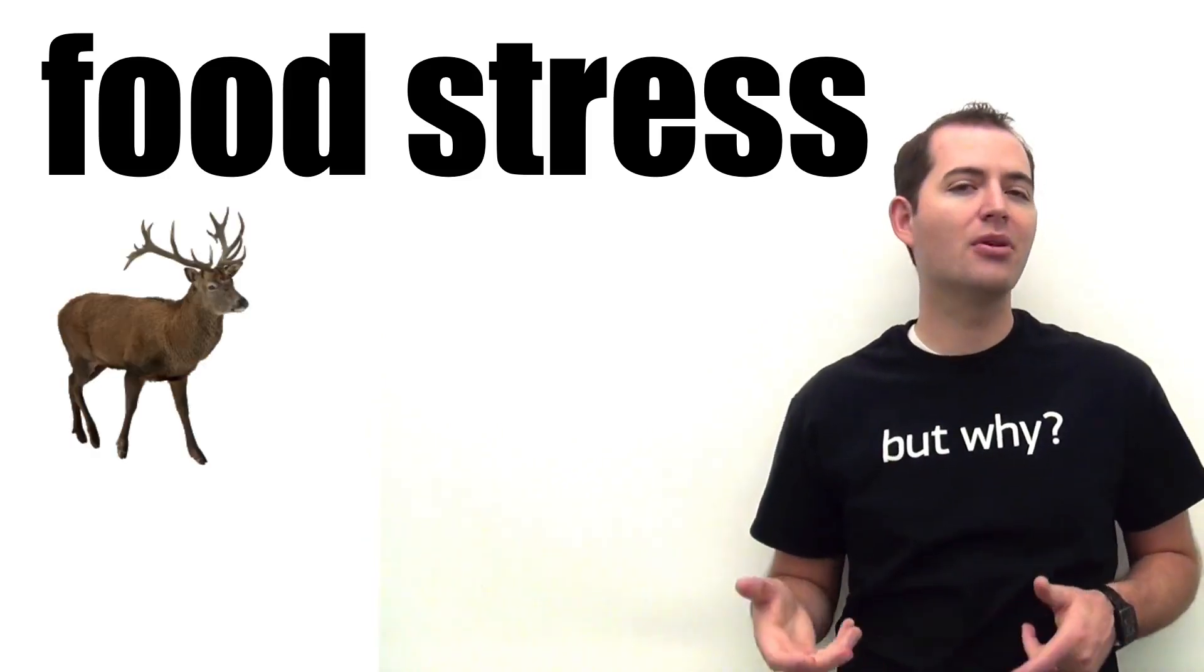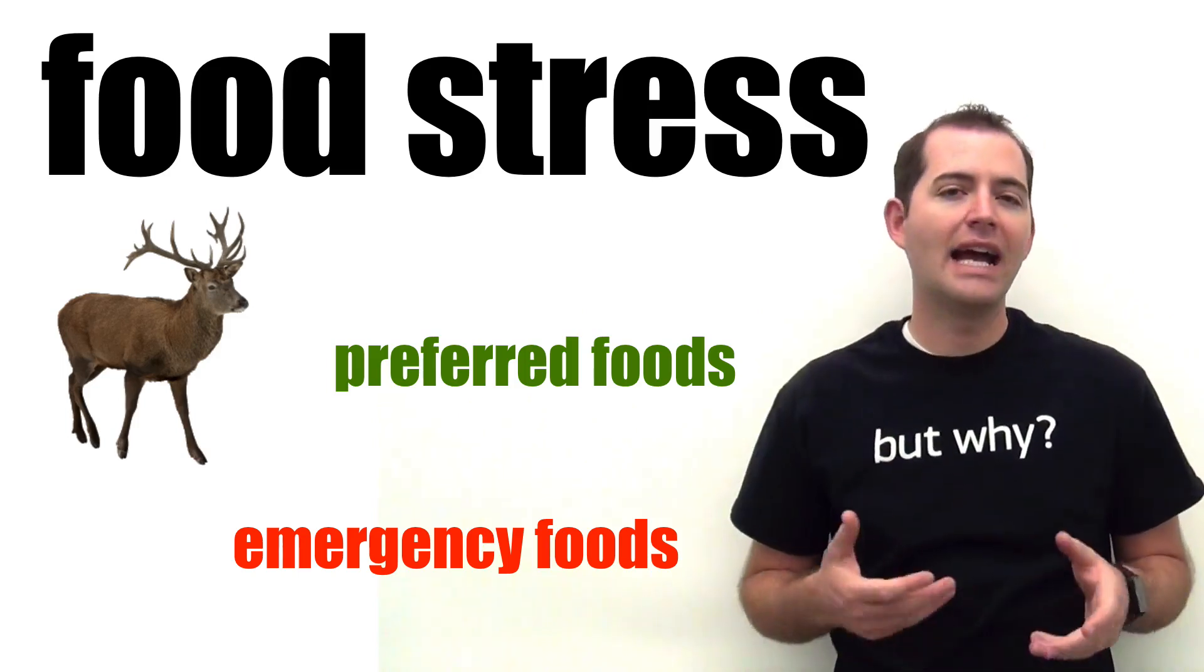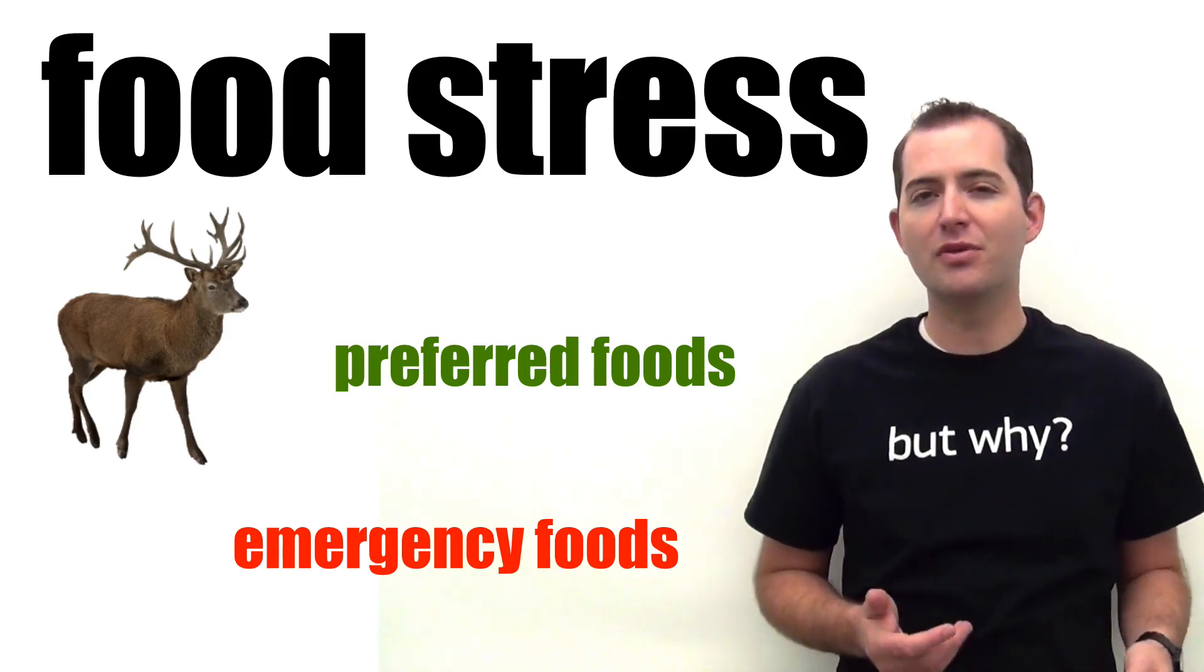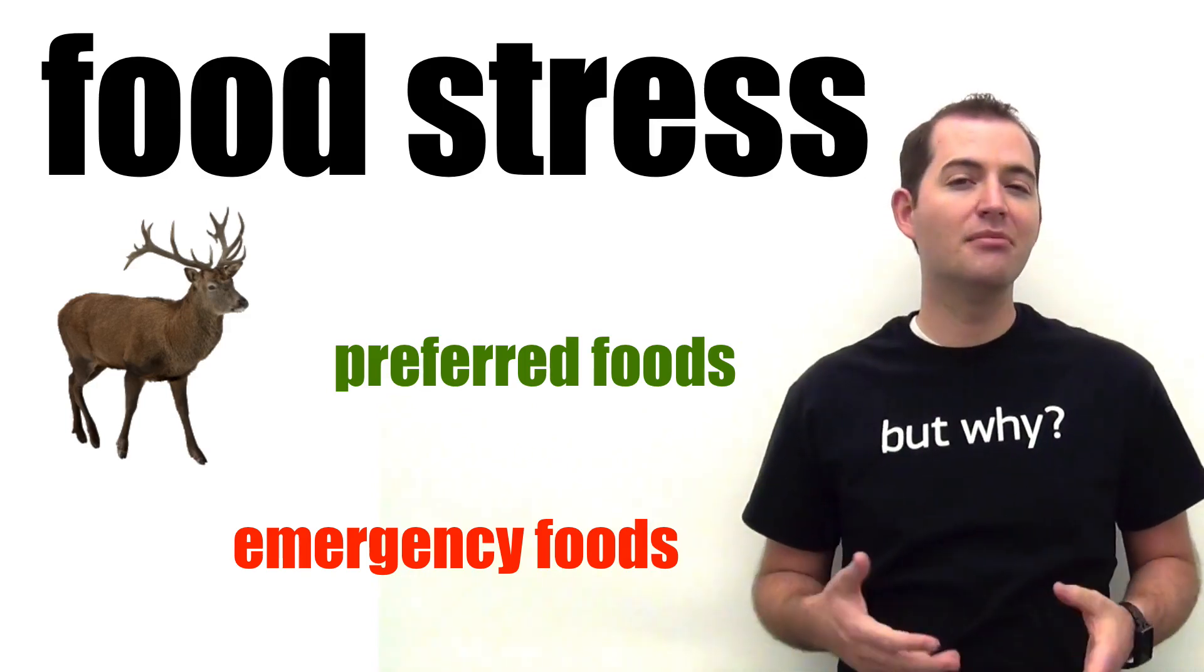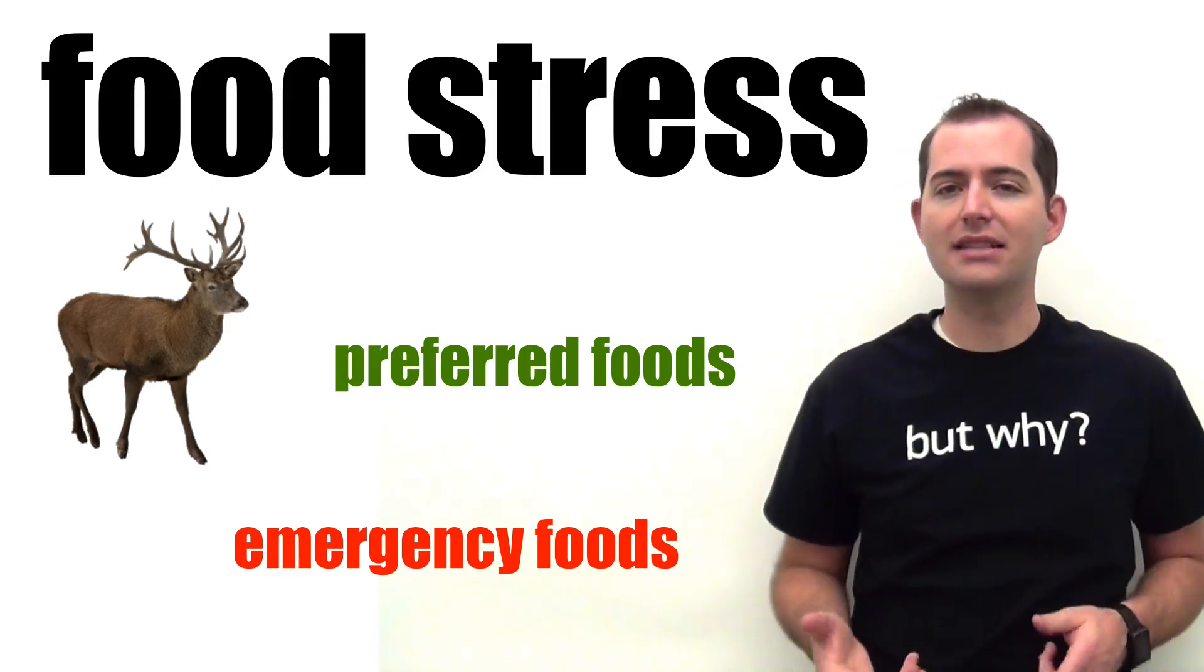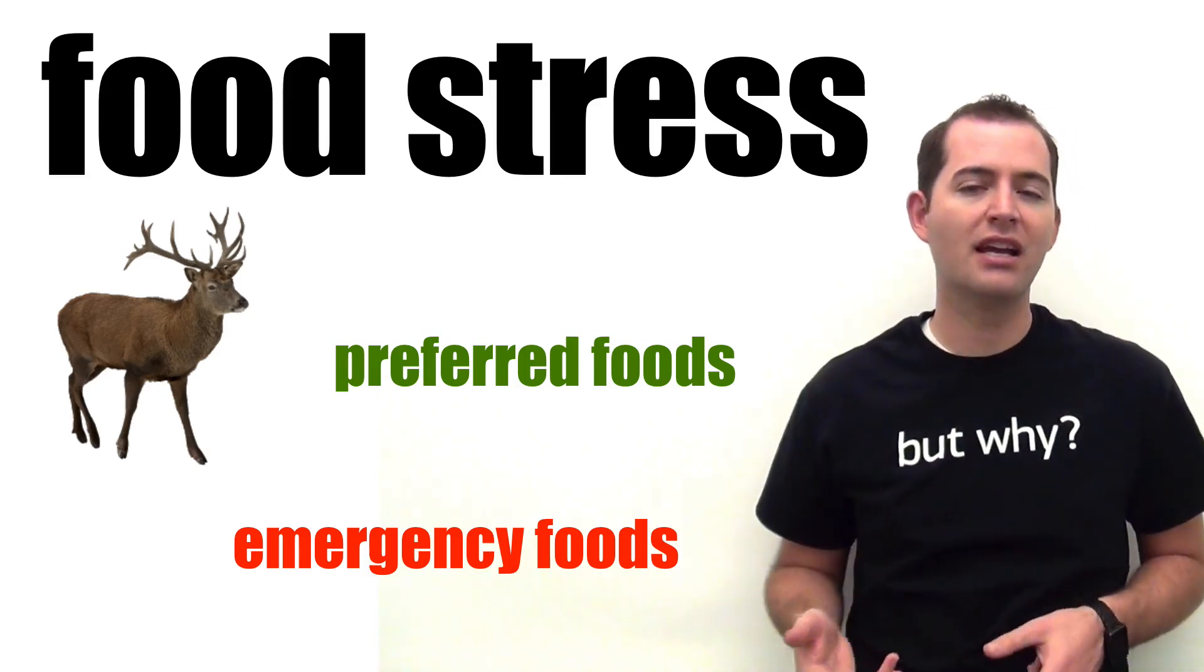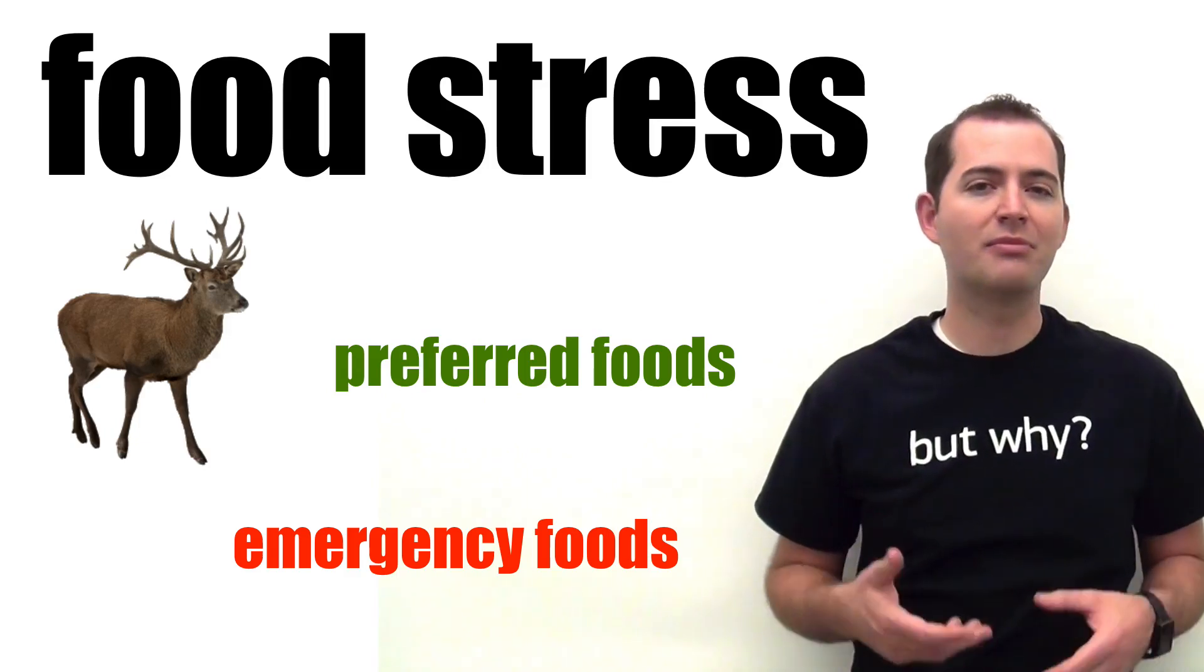For example, herbivores often have preferred foods and emergency foods. As preferred foods become limited or unavailable, herbivores will often turn to emergency foods. In many cases, emergency foods are lacking the necessary nutrients for that organism's healthy survival. Food stress and transitioning from preferred foods to emergency foods can make organisms weaker and more susceptible to predation.